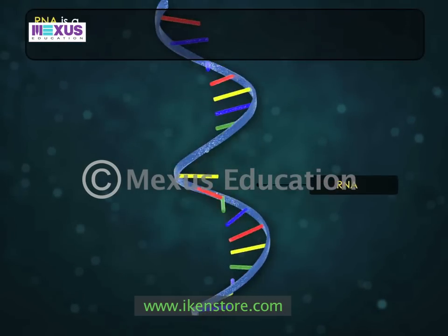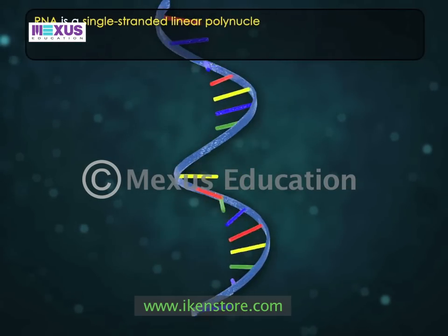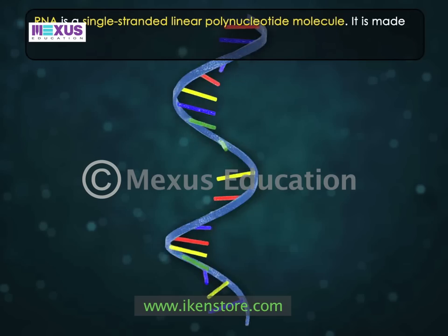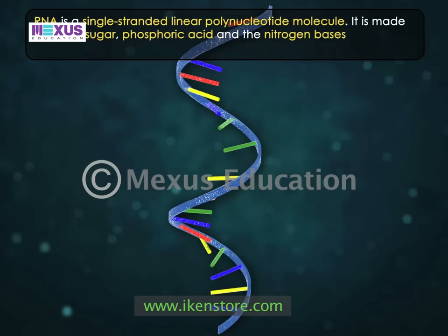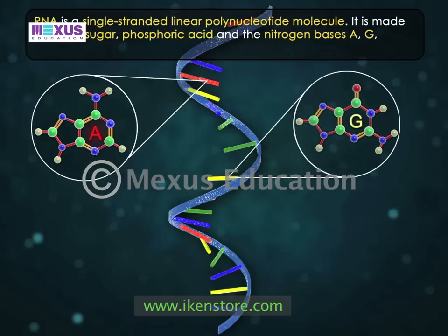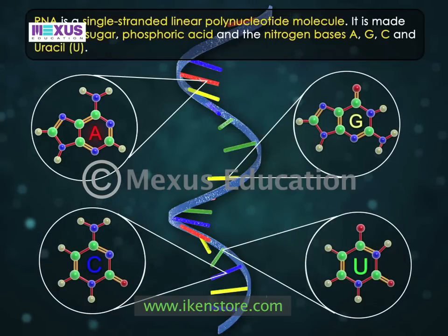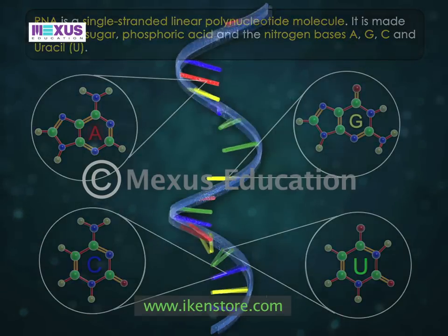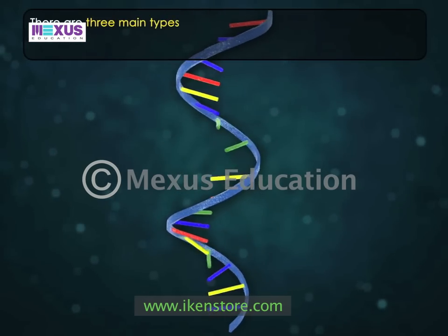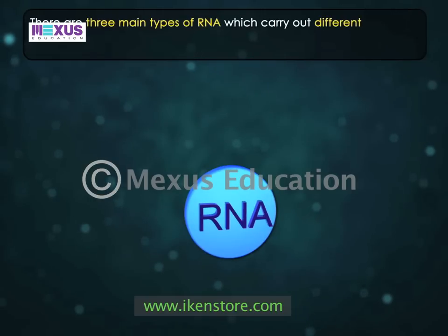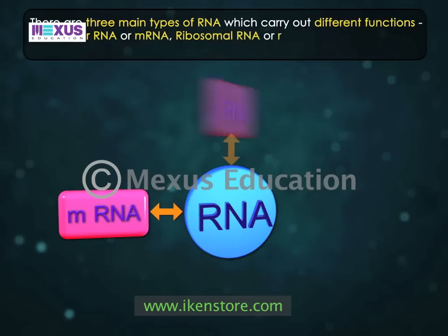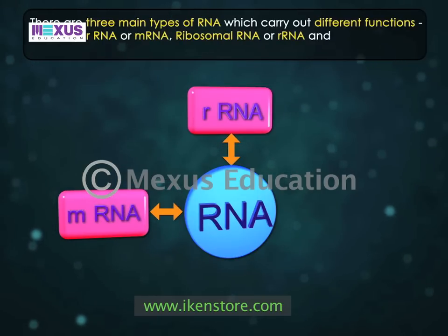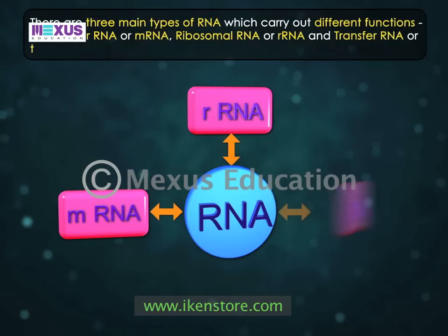RNA is a single-stranded, linear polynucleotide molecule. It is made of ribose sugar, phosphoric acid and the nitrogen bases adenine, guanine, cytosine and uracil. There are three main types of RNA which carry out different functions: messenger RNA or mRNA, ribosomal RNA or rRNA and transfer RNA or tRNA.